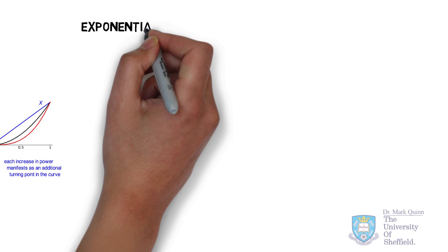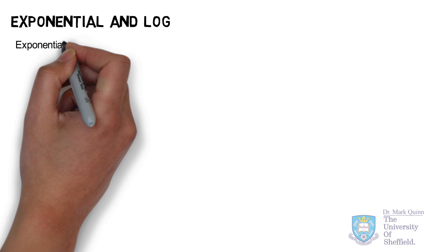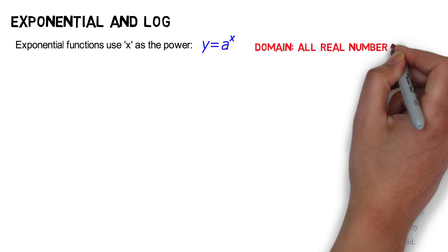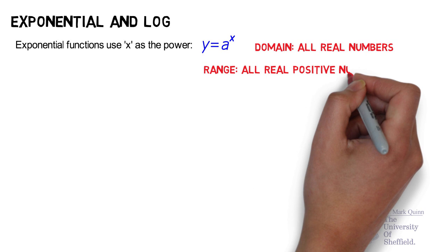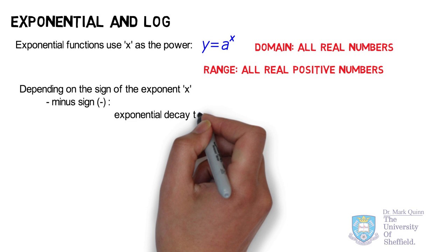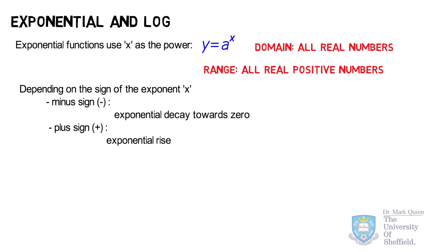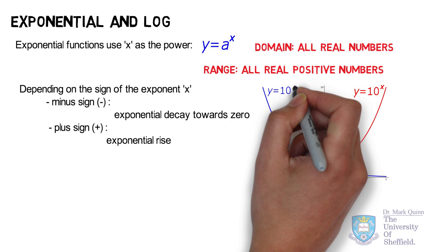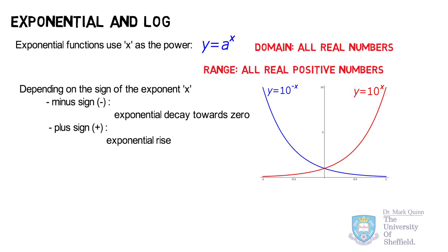While power law functions raise x to some fixed value of power, exponential functions have x as the power, so it's not constant, and neither is the rate of change. The function value can change very rapidly as the input changes. Depending on the sign, we can have exponential decay, where the function value diminishes rapidly, or exponential rise, where it increases rapidly. Using base 10, 10 to the power of x is exponential increase, and 10 to the power of minus x is exponential decay. For the domain, we can accept all real numbers, and as long as the base is positive, we end up with positive numbers in the range.